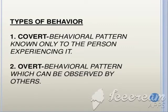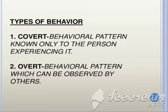Here are the types of behavior. First is covert, second is overt. Covert behavior cannot be observed by anyone — it is a behavioral pattern known only to the person experiencing it. Examples include fear and jealousy, which cannot be observed directly, though we can observe related activities with techniques. Overt behavior can be observed by anyone — it is a behavioral pattern observable by others. Examples include tears and smiles.